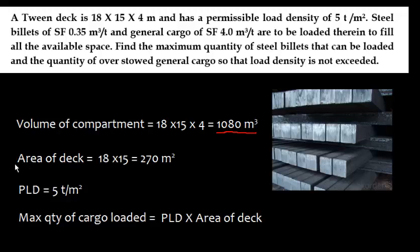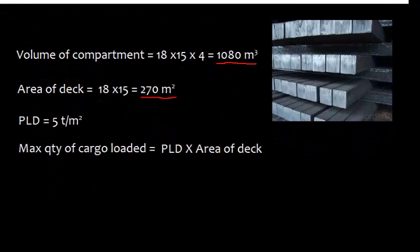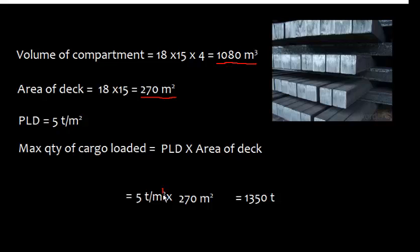The volume of the compartment is 18 × 15 × 4 = 1,080 cubic meters. The area of the deck is 18 × 15 = 270 square meters. With a permissible load density of 5 tons per square meter, the maximum quantity of cargo that can be loaded is 5 × 270 = 1,350 tons.